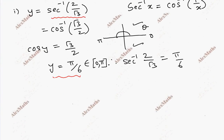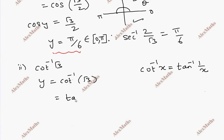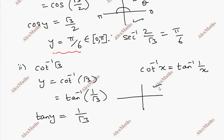Subdivision 2: cot inverse root 3. Let y equal to cot inverse root 3. The formula is: cot inverse x is also equal to tan inverse 1 by x. So this becomes tan inverse 1 by root 3, meaning tan y equals 1 by root 3. Tan is positive in the first and third quadrant, but the principal value range for tan is minus pi by 2 to pi by 2.